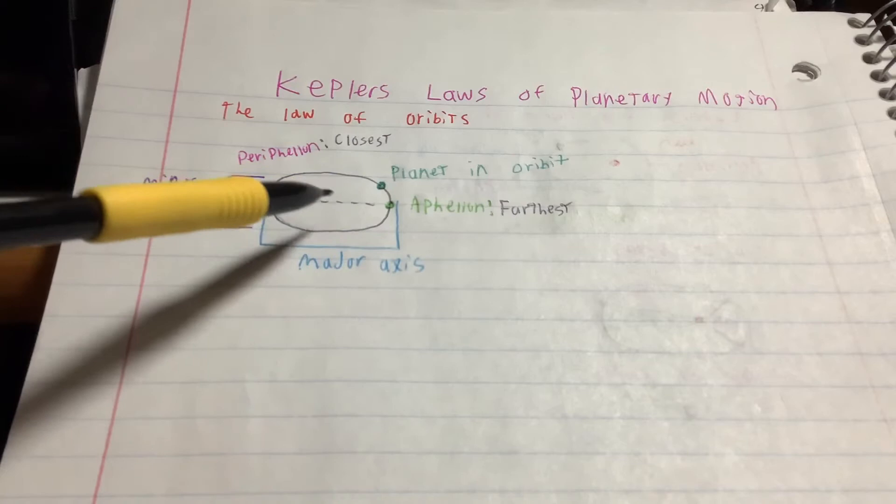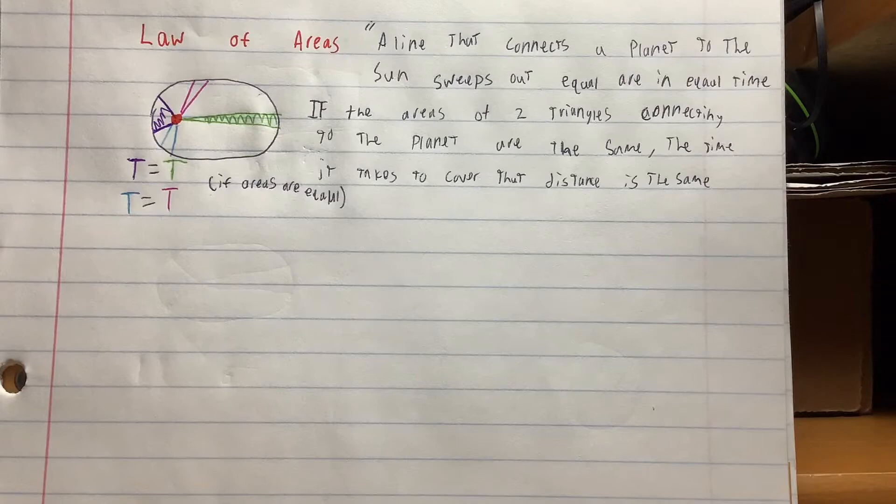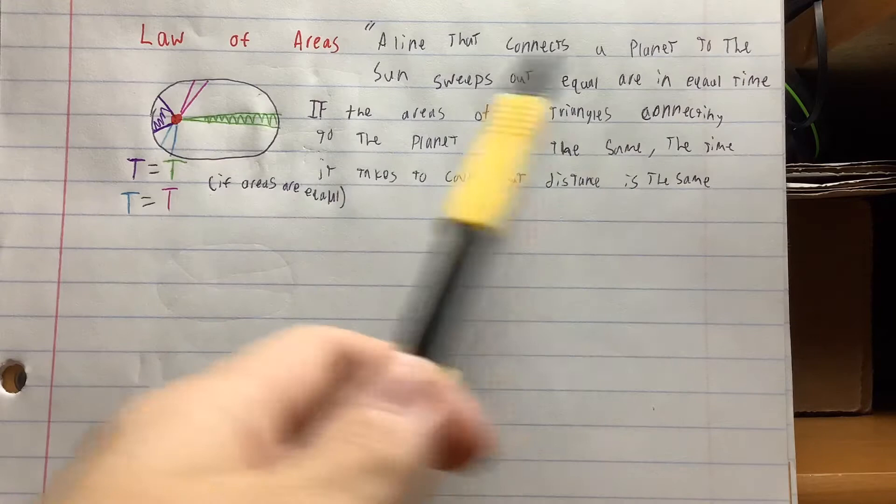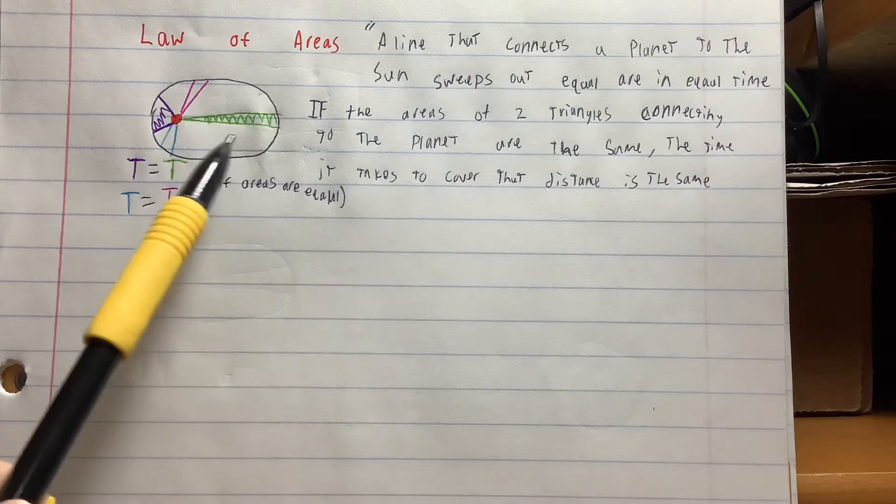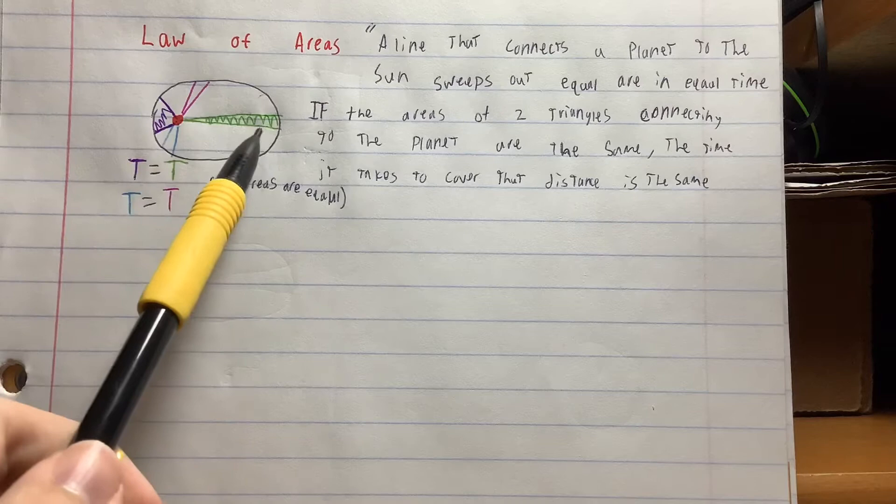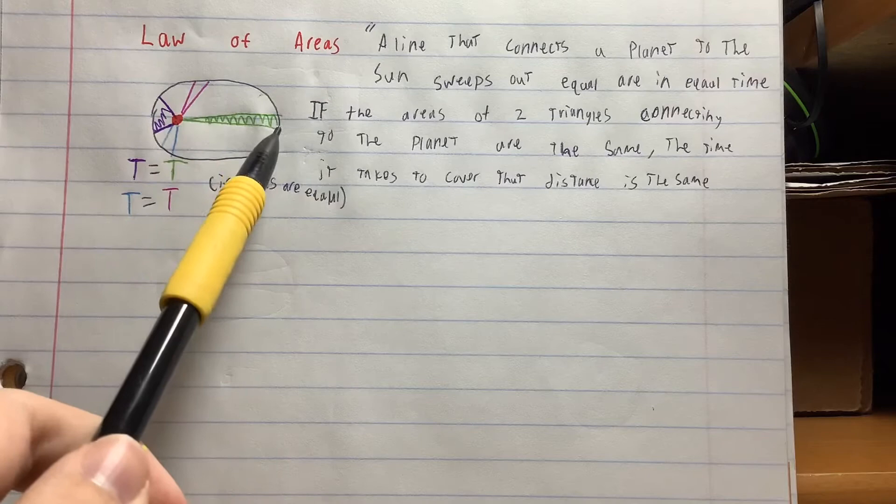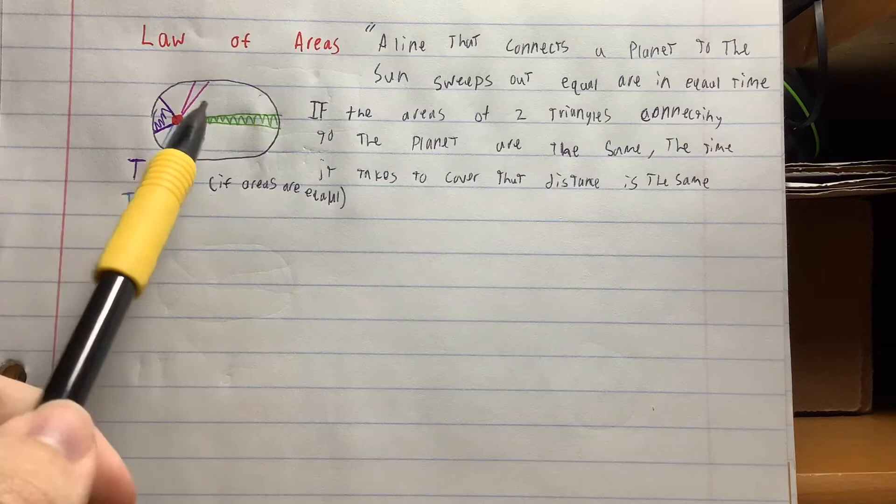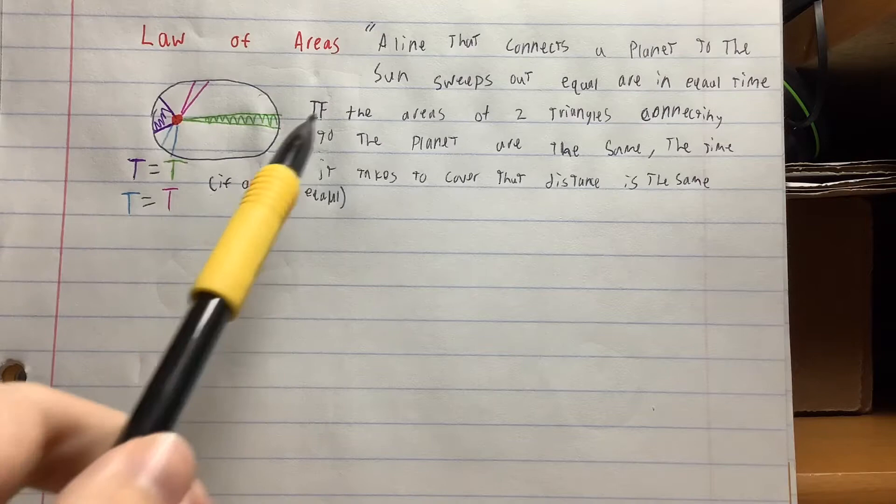Next up we have the law of areas. This one says a line that connects a planet to the Sun sweeps out equal area in equal time. So if this triangle here has equal area to this triangle here, the time it takes to go from here to here will be the same. If the areas of two triangles connecting to the planet are the same, the time it takes to cover that distance will be the same.